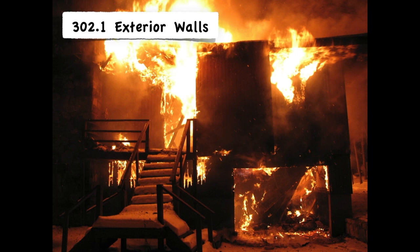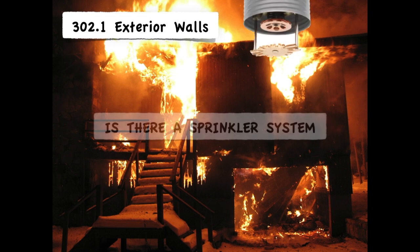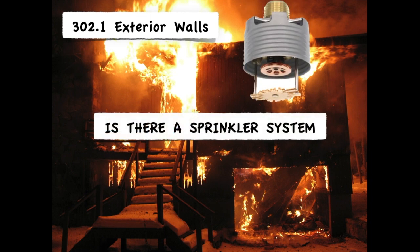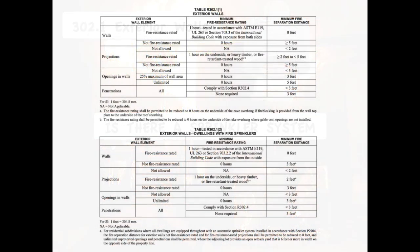Section 302.1 actually references two different tables, but which one you go to depends on this question: if there aren't any fire sprinklers, you use the first table. But if the building has a fire sprinkler system, you use the second table.